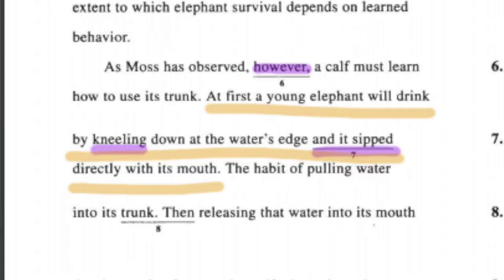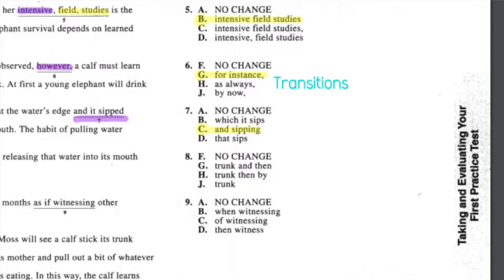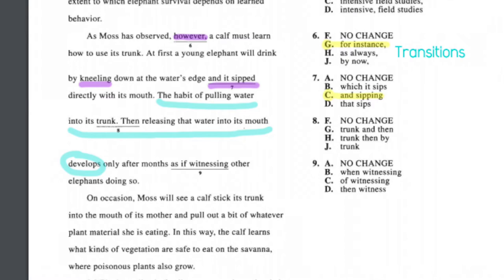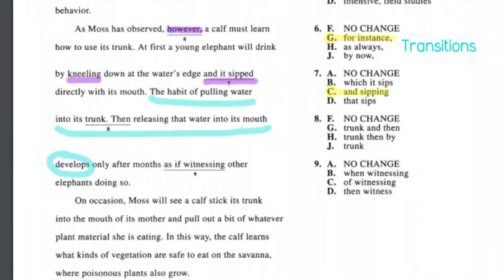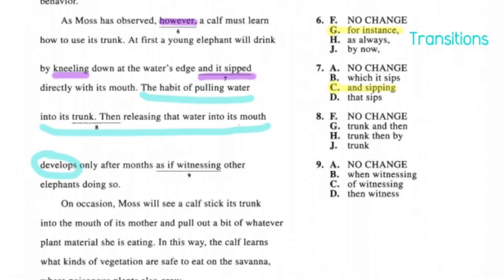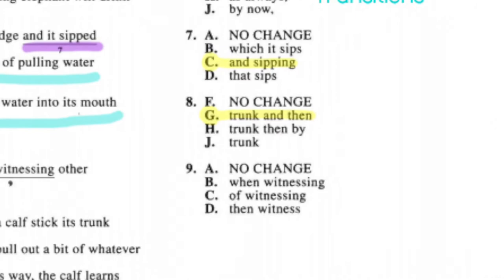Question seven is a grammar question on verb tense. The sentence reads: 'at first, a young elephant will drink by kneeling down at the water's edge and blank directly with its mouth.' The verb already in the sentence is 'kneeling,' so we need a matching -ing form — 'sipping.' Kneeling and sipping match. Question eight: the period should not go after 'its trunk' because 'the habit of pulling water into its trunk' is not a complete sentence — no verb. The full subject needs to continue to 'develops,' so the right answer is G.